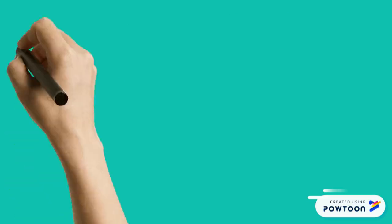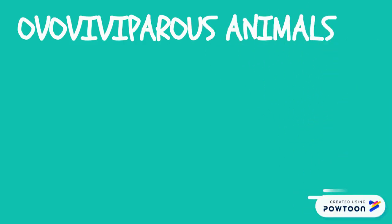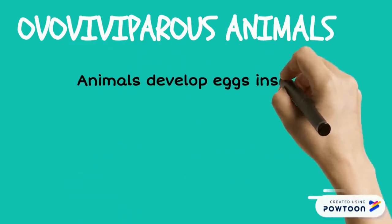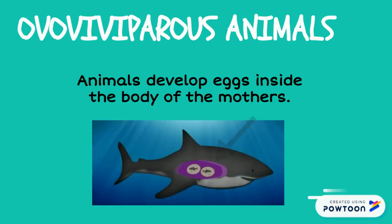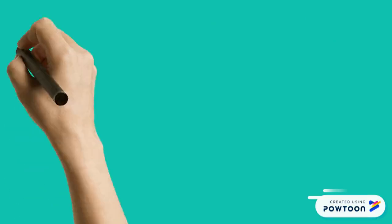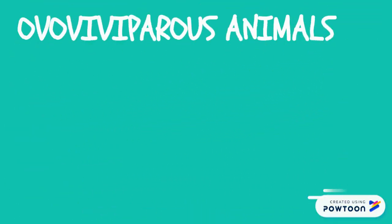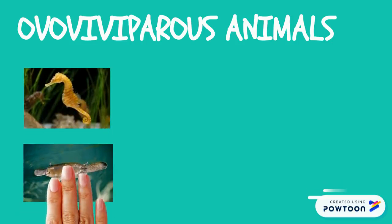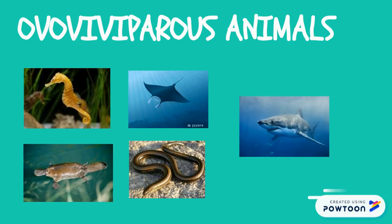The last group is ovoviviparous animals. It isn't very common but it exists in some animals. It means that animals develop eggs inside the body of the mother. Some examples of ovoviviparous animals are seahorses, platypus, manta ray, slow worm, and white shark.